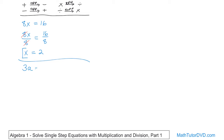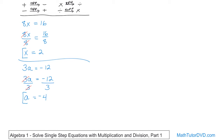What if you have 3 times a is equal to negative 12? Again, the variable is trapped because something is being multiplied by it — not addition or subtraction, but multiplication. So you do the opposite, which means division. Rewrite the problem and divide the left by 3 and the right by 3. The 3s divide out — 3 divided by 3 gives 1 — so only a is left. Then negative 12 divided by 3: since the signs are opposite, the answer is negative 4. Check: 3 times negative 4 is negative 12. Correct.